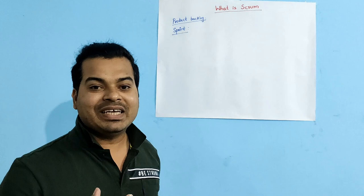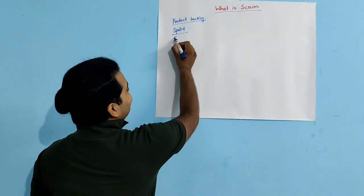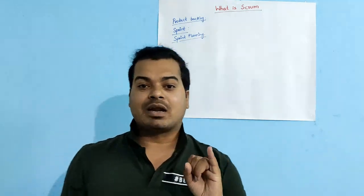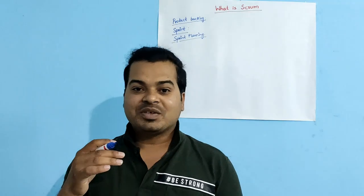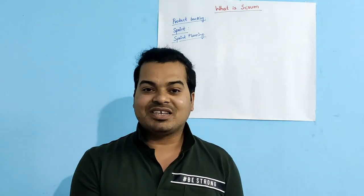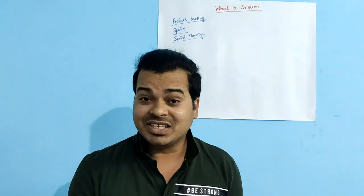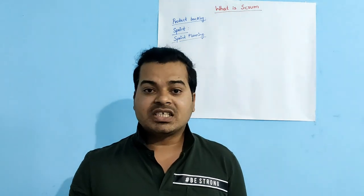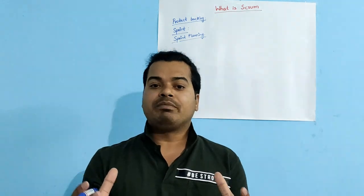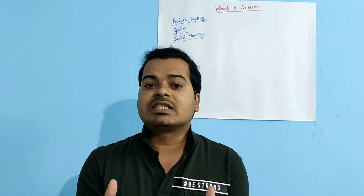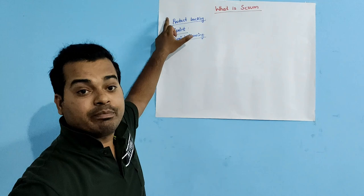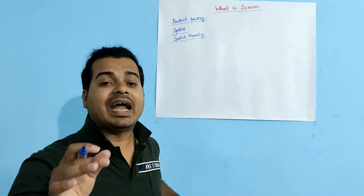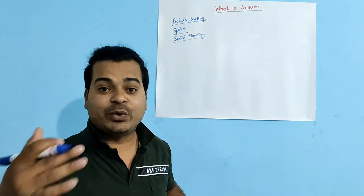The next concept in Scrum methodology is Sprint Planning. Sprint Planning is a meeting conducted by the Scrum Master, product owner, or business analyst. They invite people from the development team, testing team, and architecture, and they meet to decide what items to pull from the Product Backlog to work on in the coming Sprint.